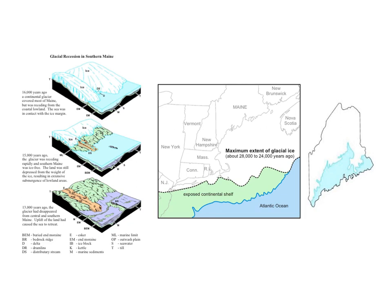When the glacier was at its maximum extent about 28,000 to 24,000 years ago, it was down to Block Island, Nantucket, Martha's Vineyard — and Long Island is even one big bulldozed ridge of dirt from that huge ice sheet, marking the extent of the ice. When the glacier was over the land, it pushed down on the crust. We know the lithosphere rides on the asthenosphere, so when the glacier started receding, the water followed it back, and eventually the ground rebounded after the ice was long gone.